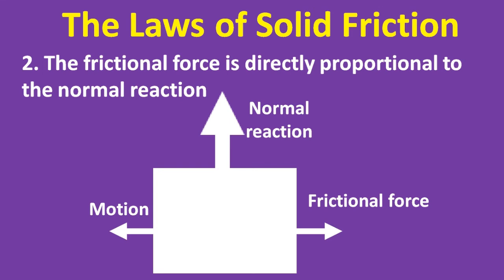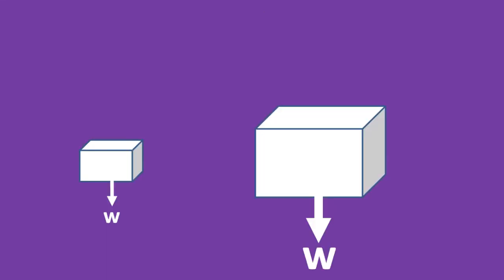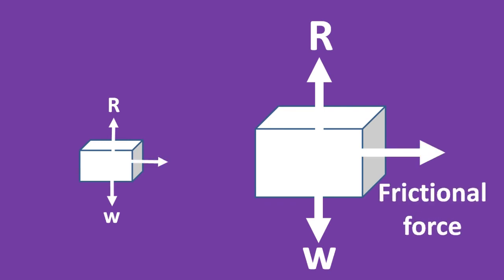I get it. If I have two similar objects with one being heavier than the other, the normal reaction is bigger for the heavier one, and so the frictional force will also be greater for that one. Yes, because of this greater frictional force, you will need more force to move the heavier one than the lighter one. This law is very clear to me now, thank you for the explanation.